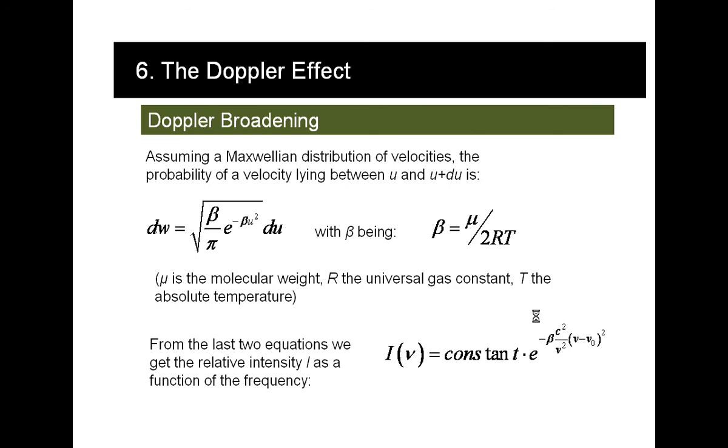If we assume that the velocities follow a Maxwell distribution, then we can calculate the probability of a velocity being in a sharp region, and this is the formula that gives that.